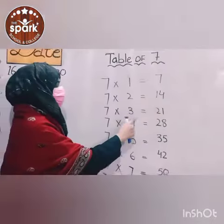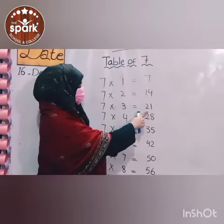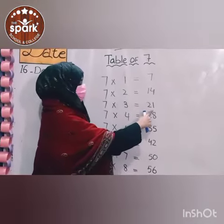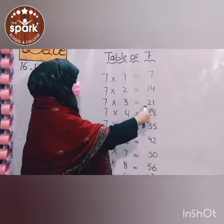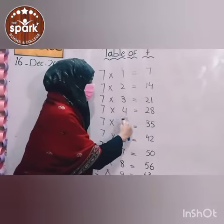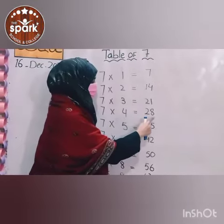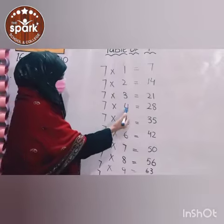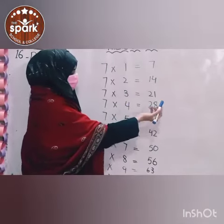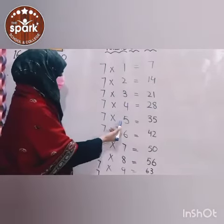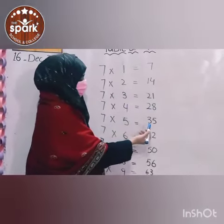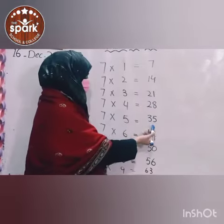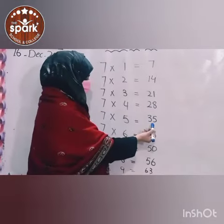7 threes are 21. 7 threes are 21. 7 fours are 28. 7 fours are 28. 7 fives are 35. 7 fives are 35.